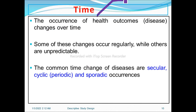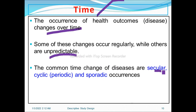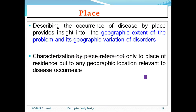Regarding time, the occurrence of outcomes changes over time. Whether outcome occurrence changes over time or not is studied under the time category. Some of these changes occur regularly while others are unpredictable. The common time changes are either circular, cyclic, periodic, or sporadic occurrences. For place, describing the occurrence of disease by place provides insight into the geographic context of the problem and the geographic variation of disorders.